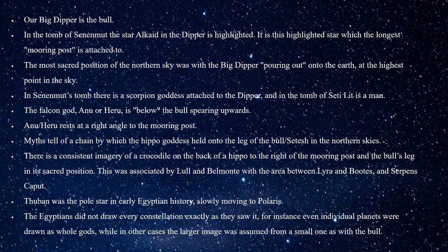In Senmut's tomb there's a scorpion goddess attached to the dipper, though in the tomb of Seti the First this is a man. The falcon god Anu or Horus is below the bowl, spearing upwards, and also to the left of the great mooring post — he rests at a right angle to that mooring post. We have also the chain by which the hippo goddess held onto the leg of the bull — or Satesh — in the northern skies after his defeat by Horus, when the leg was thrown up into the sky and then chained down or held by a rope.